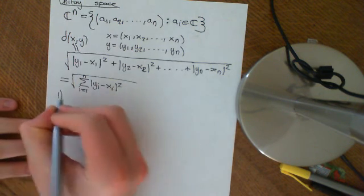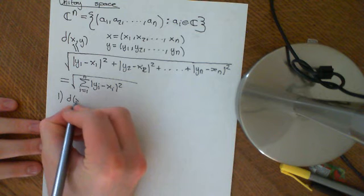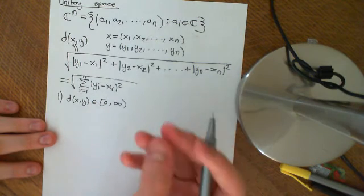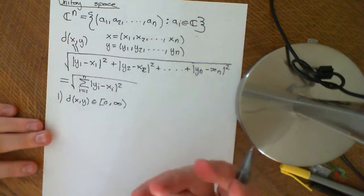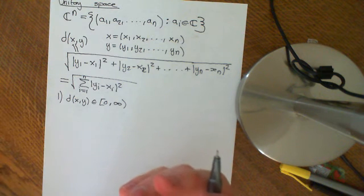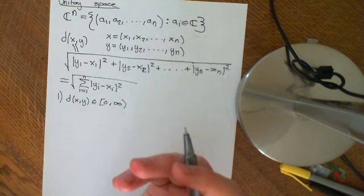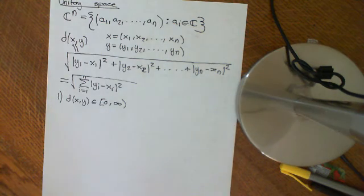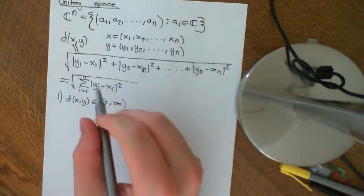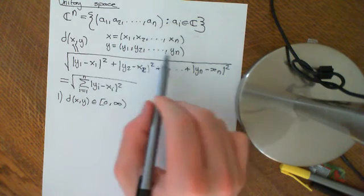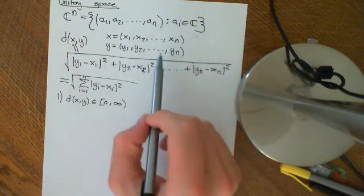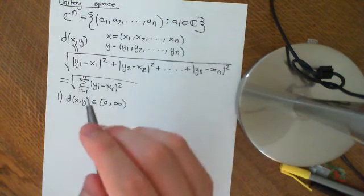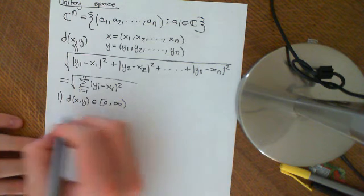Let's check that it obeys the first three axioms. First, that D(X, Y) is an element of the non-negative real numbers. Each modulus is non-negative; when you square it, it's still non-negative; when you add them all together, still non-negative; when you square root a non-negative real number, you still get a non-negative real number. It will always be finite, providing all entries are finite complex numbers.